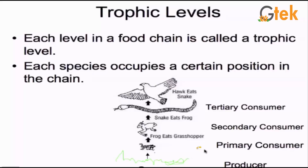The producer is eaten by the primary consumer, and the primary consumer is eaten by the secondary consumer — that is, the frog is eaten by the snake. And the snake is finally eaten by the hawk, which is the tertiary consumer. This is what we mean by trophic levels.